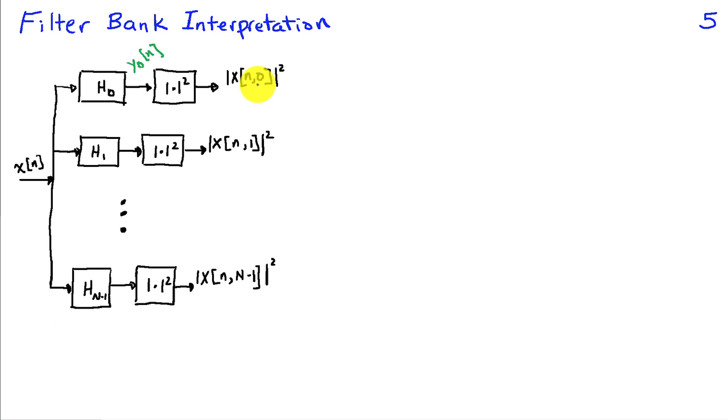The same thing can happen at other frequencies. Here we have the first frequency, k equals 1, and this is a filter which passes frequencies corresponding to that. This is narrow band, so we form the magnitude squared of the output and get the spectrogram at the second frequency as a function of time. And so on, if we have the last frequency that we're interested in, a narrow band filter centered there, and we take the magnitude squared of that, we get the spectrogram at that particular frequency.